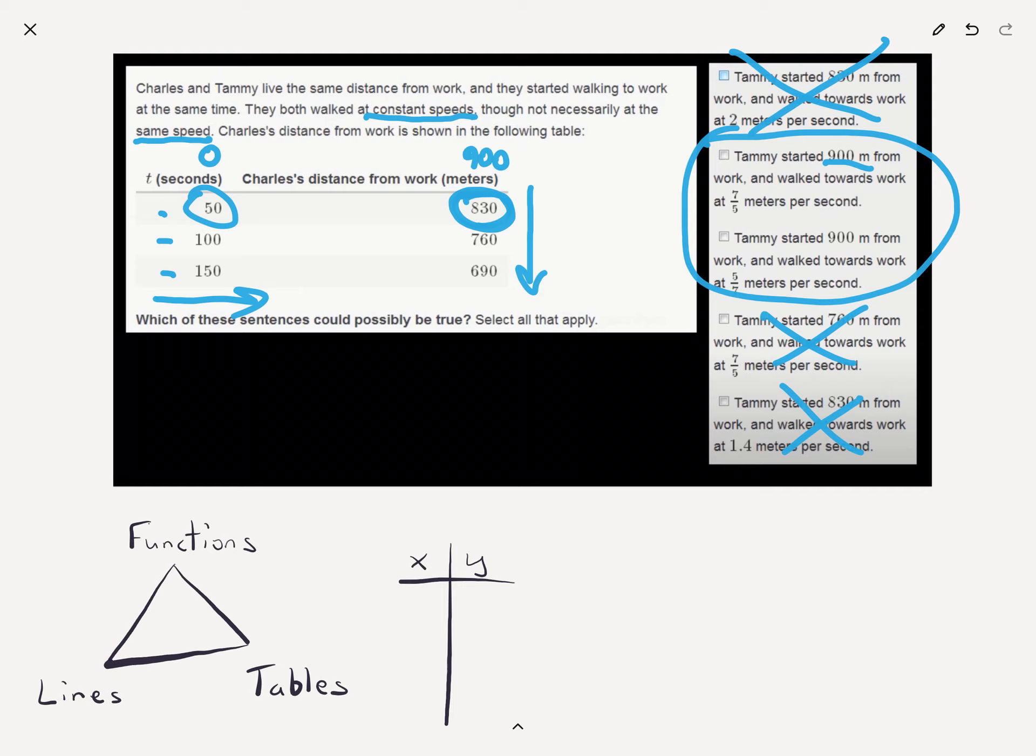So let's read those and see what makes sense. Tammy started 900 meters from work and walked towards work at 7 fifths meters per second. What a lovely fraction. Tammy could have started 900 meters from work and walked towards work at 5 sevenths meters per second. What they're asking us to do is build a second function and compare that with what we know about Charles. So let's do that.